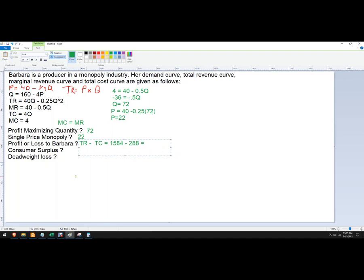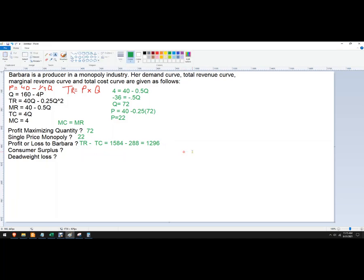That's going to give us a profit of 1584 minus 288, which is 1296. That's our total profit.